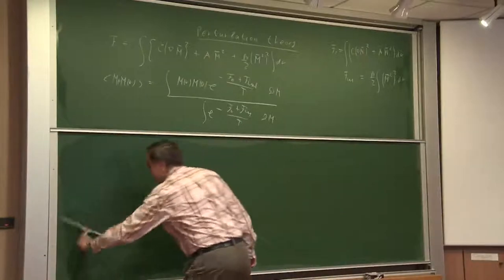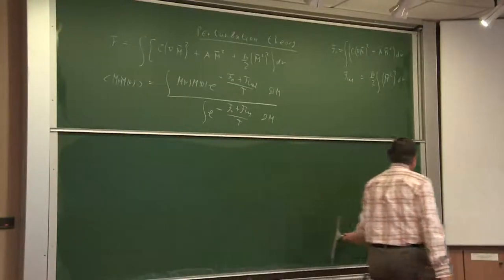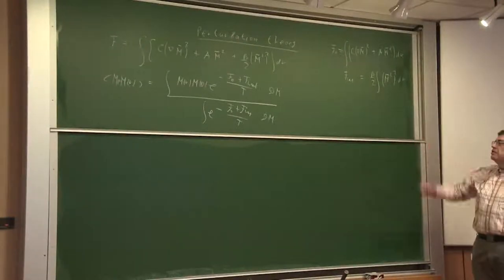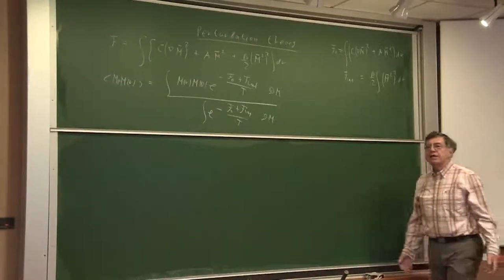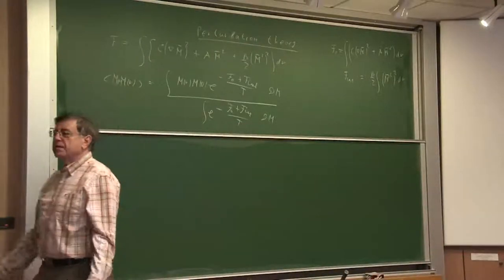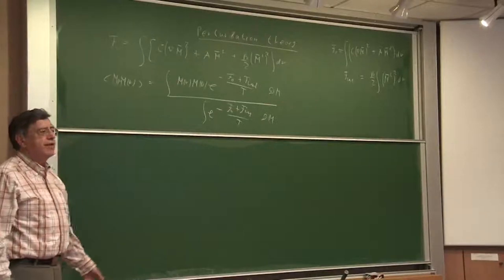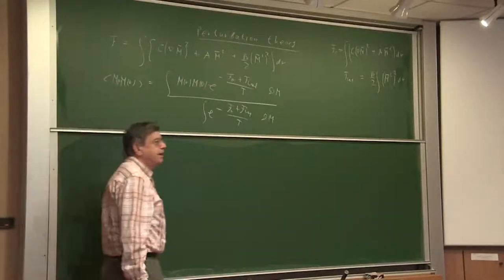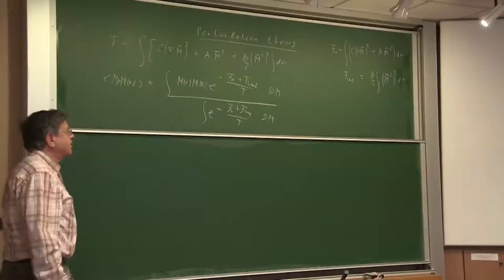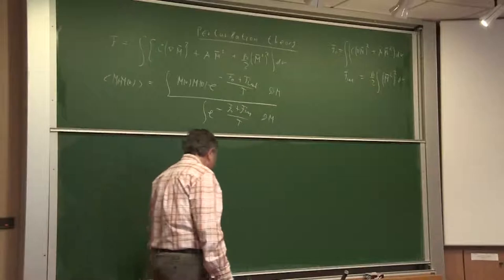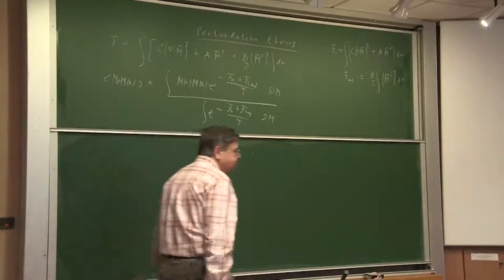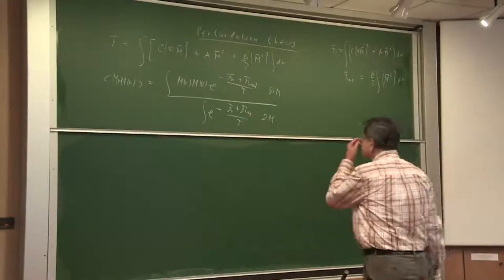If one had in perturbation theory always converging integrals, this would mean that conventional Landau theory of phase transitions is fine. But if one gets diverging integrals, then one should hope that something new appears — and it does. So how does one calculate this perturbation theory?